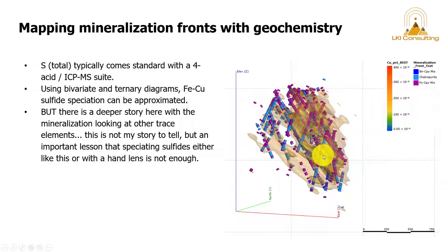In the purple, we have the pyrite-chalcopyrite mixture, and very little, but we do in the dark blue have some bornite-chalcopyrite mixtures from the geochemistry. And this here is our copper shell.